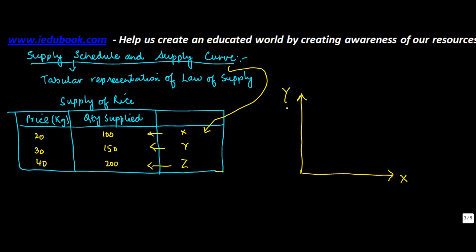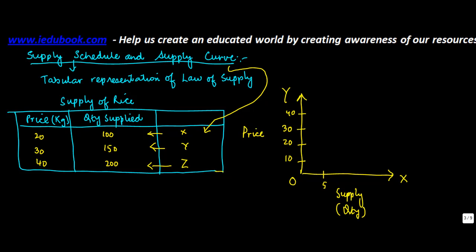On the X-axis I keep the quantity supplied, and on the Y-axis I denote the price. So let's mark 10, 20, 30, and 40 on the Y-axis and 50, 100, 150, 200 on the X-axis.